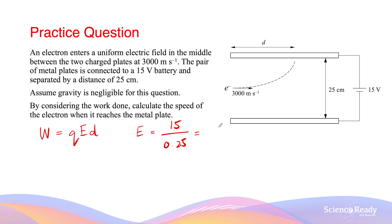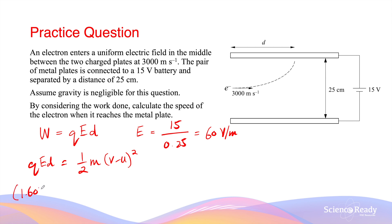This gives 60 volts per meter as the electric field strength. The work done on the charged particle is transformed into kinetic energy, so we write: QED equals half m times (v squared minus u squared), where v is the final velocity and u is the initial velocity. Q is the charge of the electron, 1.602 × 10⁻¹⁹ C; E is 60 V/m; and D is 0.125 meters, since the electron enters in the middle between the two plates.